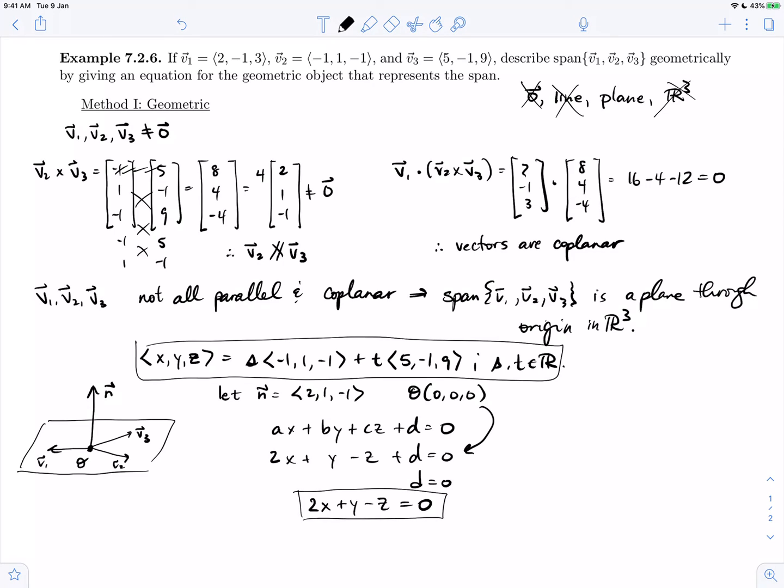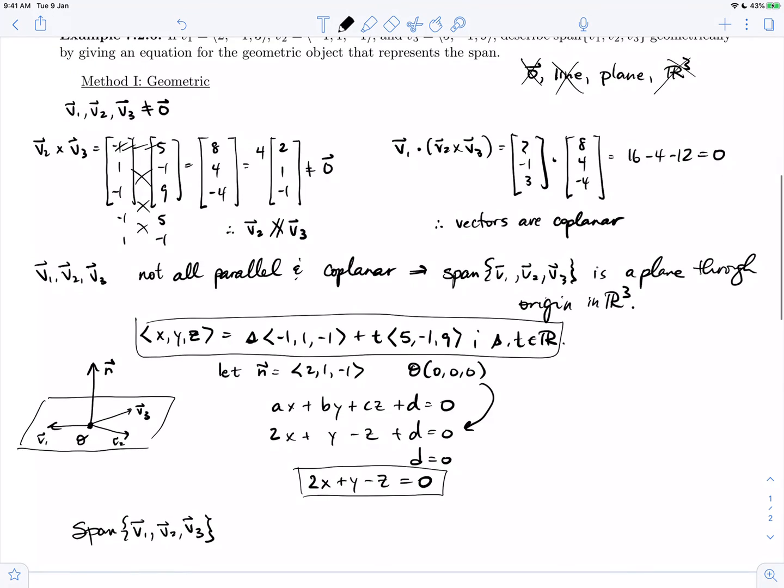Let's write ourselves a little summary sentence. The span of v1, v2, v3 is geometrically a plane through the origin represented by the equations above.